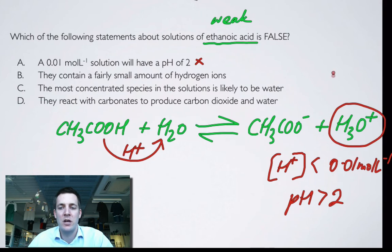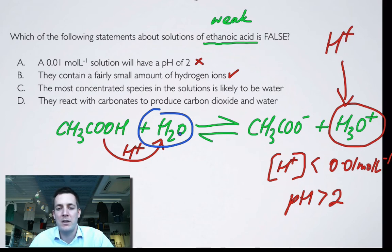They contain a fairly small amount of hydrogen ions. Remember, this is the hydrogen ion. There's not going to be very many of them because ethanoic acid is weak. So that sounds pretty good. The most concentrated species in the solutions is likely to be water. Well, think about it. Most times when you dissolve something in water, the water's in the massive majority. There's much, much more water than the thing you're dissolving usually. And if we're saying that hardly any of these things turn into them, then the water's going to be not only more concentrated than this, which is what you're dissolving in the water, but it's going to be a hell of a lot more concentrated than them as well. Because hardly any of these form. So that sounds pretty good too. And they react with carbonates to produce carbon dioxide and water. Well, all acids react with carbonates to produce carbon dioxide and water. So that's pretty good too. So just A there is the false one.